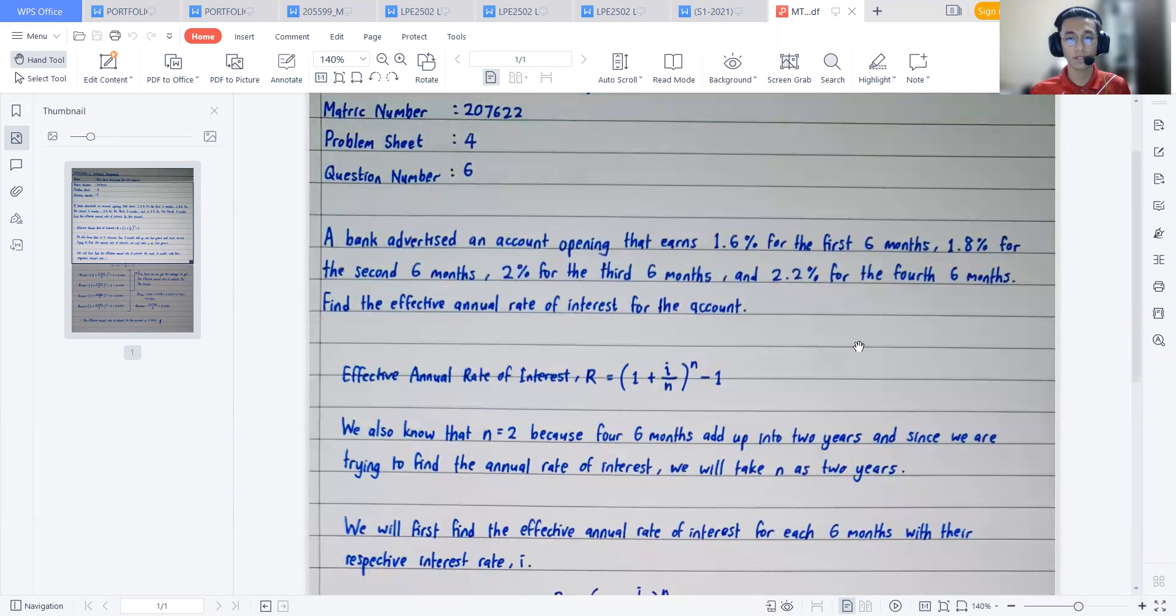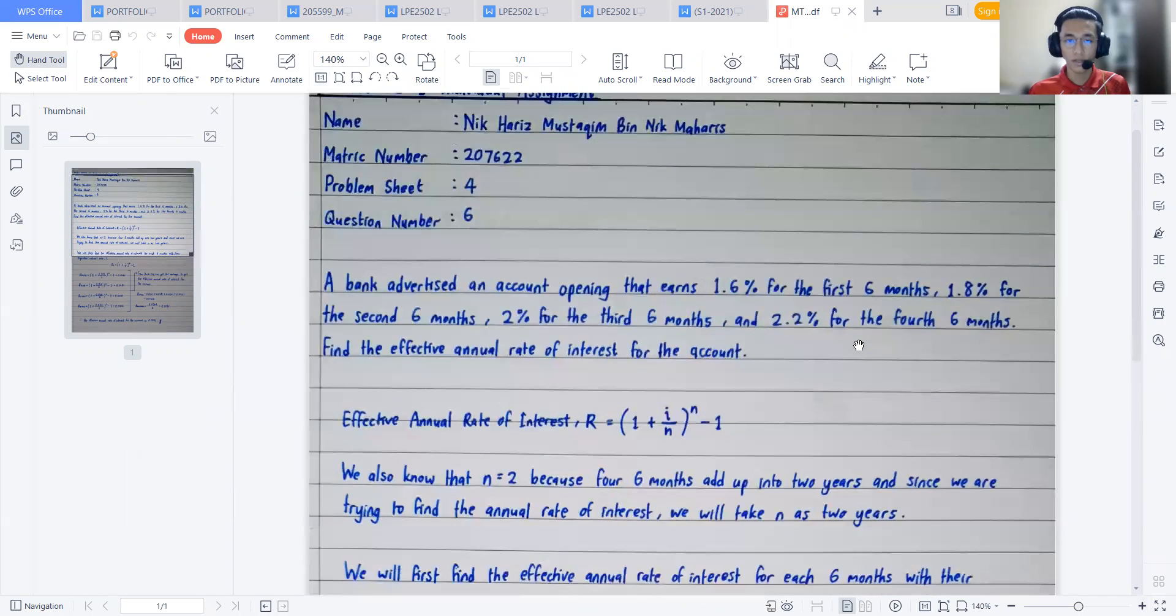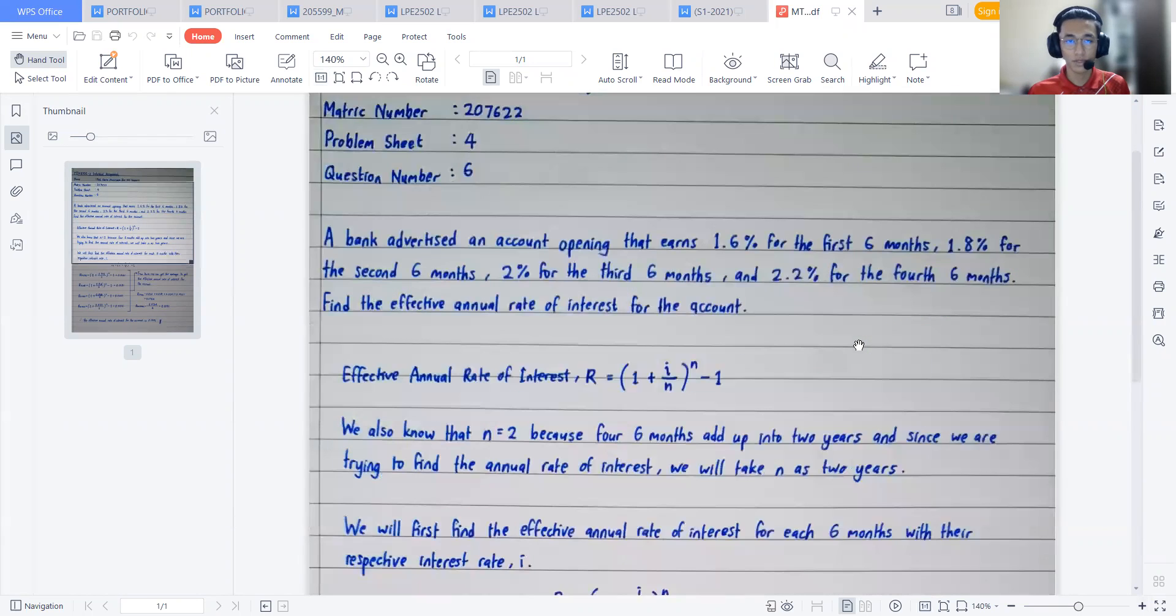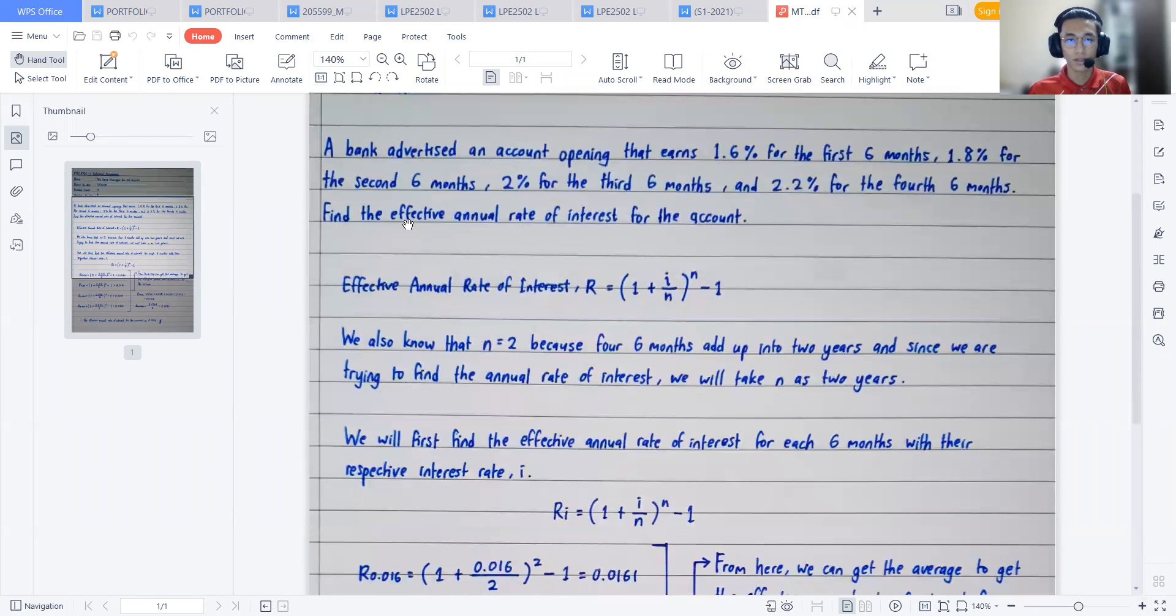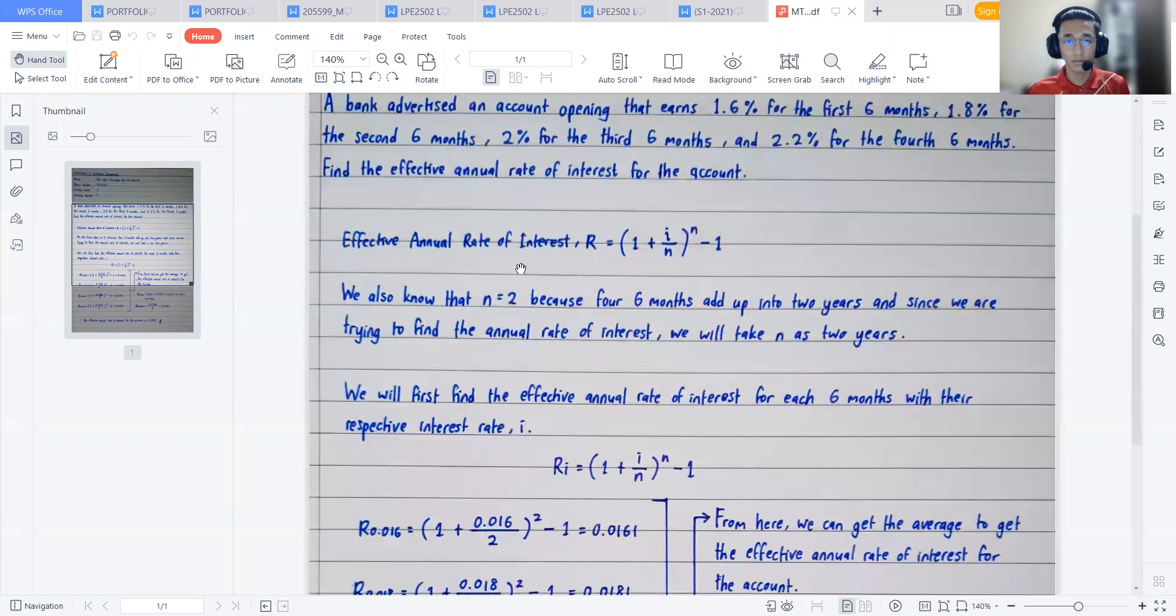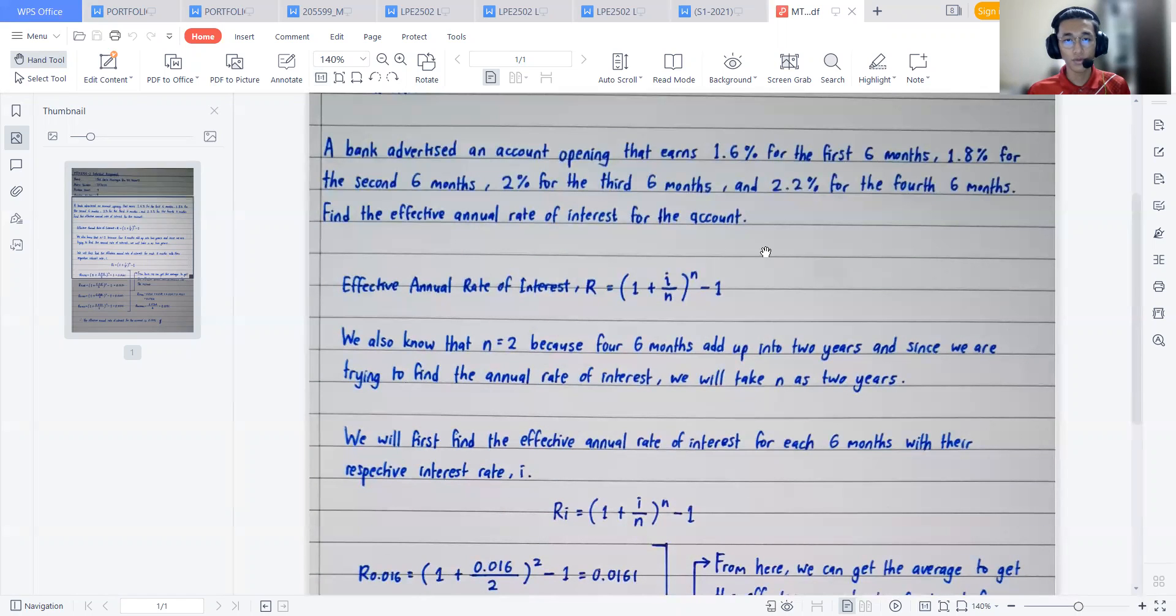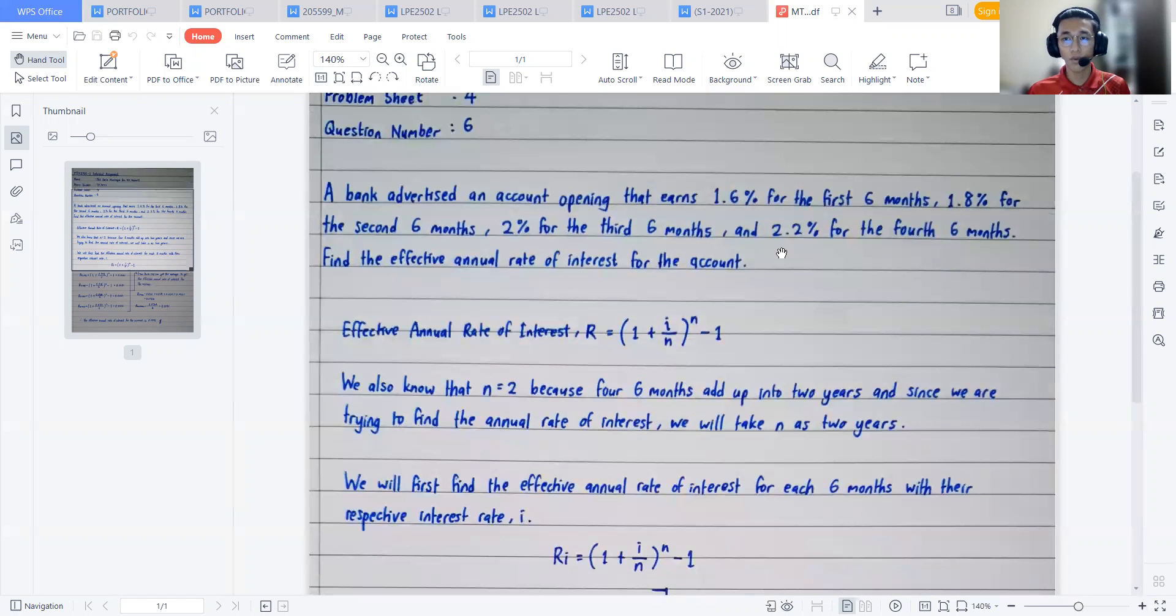Find the effective annual rate of interest for the account. So the keyword here is effective annual rate of interest for the account. We know that the formula for effective annual rate of interest R is equals to (1 + i/n)^n - 1.